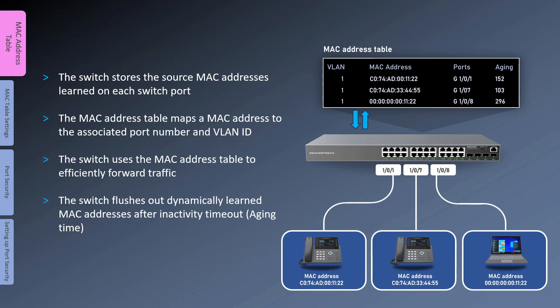The MAC address table consists of layer 2 addresses that the switch dynamically learns on each switch interface. When a switch receives a frame on a particular interface, it retrieves the source MAC address and stores it in the MAC address table together with the associated port number and the VLAN ID. The switch uses the MAC address table to efficiently forward traffic directly to its destination. Without the MAC address table, the switch would forward traffic out on all interfaces.